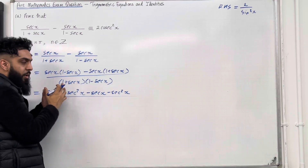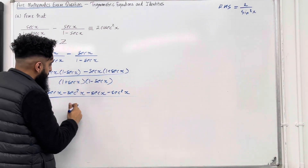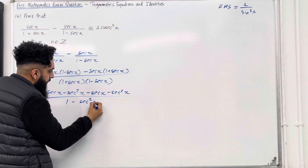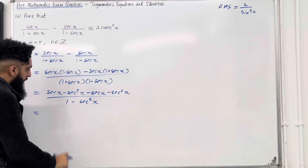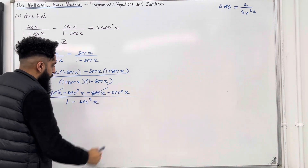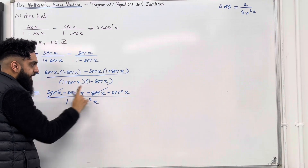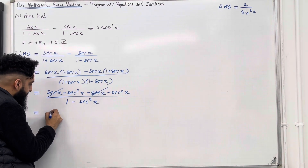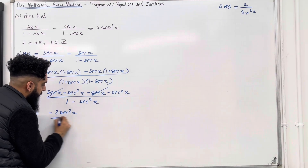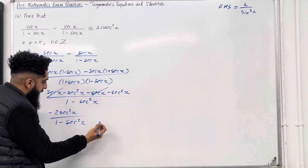I notice that in the denominator I've got a difference of two squares, so that simplifies to 1 minus sec squared x. The sec x terms in the numerator cancel out — we've got like terms. So minus sec squared x minus sec squared x gives minus 2 sec squared x, all over 1 minus sec squared x.